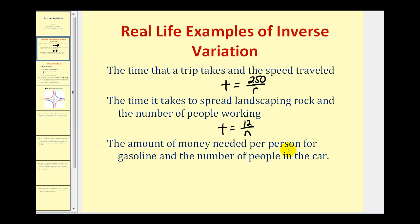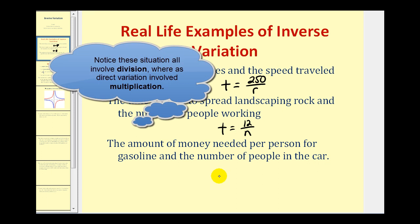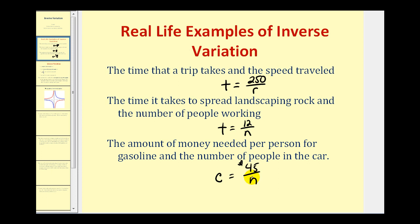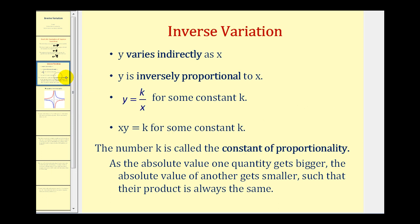The last example: the amount of money needed per person for gasoline and the number of people in the car. If it's going to cost $45 worth of gas for a trip, the cost per person C equals $45 divided by the number of people N. Notice that as N increases, the total cost per person decreases. This is an example of inverse variation.